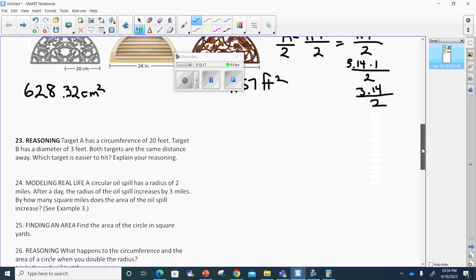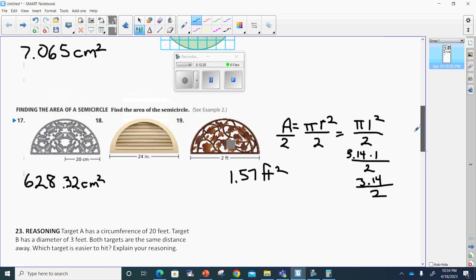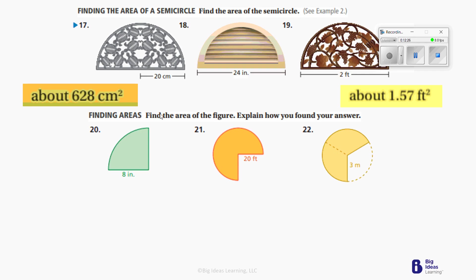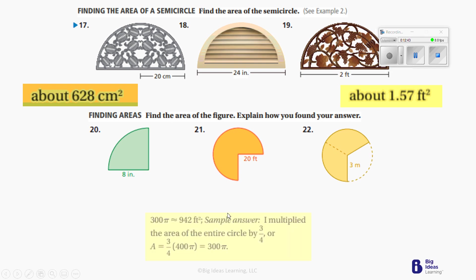Let's head down to number 21. It says find the area and explain how you found it. If I was going to do 21, I'd realize that I could take the formula for a circle and then multiply it by 3 fourths, or even multiply it by 0.75. They said it's going to end up being about 942. They multiplied the entire circle's area by 3 fourths, giving us 3 fourths times 400 pi.